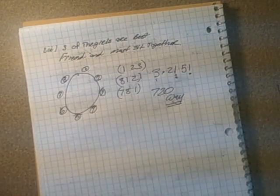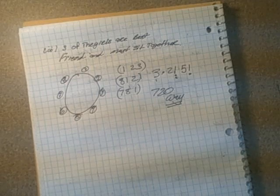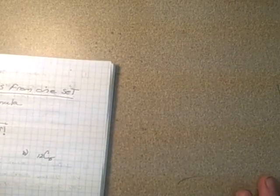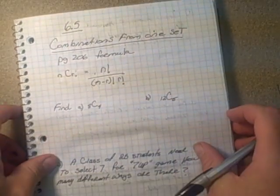That's an example of some circular and ring permutations. Our next section, we're going to look at combinations from a set, and that's section 6.5. We'll get into that in our next tutorial.